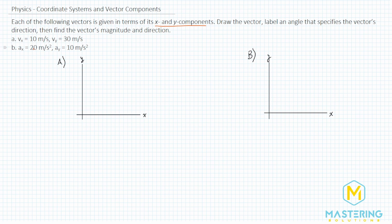For part A, they tell us the x component is 10 meters per second, and the y component is positive 30 meters per second. When we draw the x component up here, we're doing the whole parallelogram strategy that they talk about in the book for drawing vectors. When we draw the resultant vector, it'll be like this — and this will be vector v.